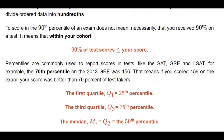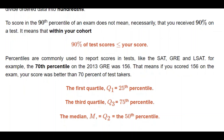Q3, the third quartile, is the 75th percentile because it talks about a point that covers three-fourths of the data. And Q2, the second quartile, is called the median, which is the 50th percentile — it talks about the middle point of the data.